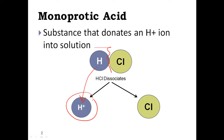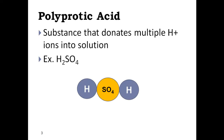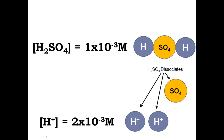Acids are substances that produce H+ ions into solution. When we look at pH, the strength of an acid is determined by the quantity of H+ ions in solution. For substances that donate just one H+ when they dissociate, they're called monoprotic. For today's lesson, we're going to assume dissociation happens completely and that all the acids we're discussing are strong acids.